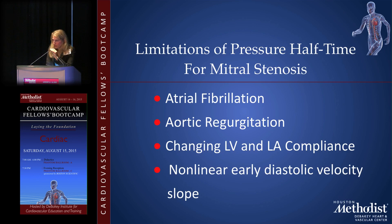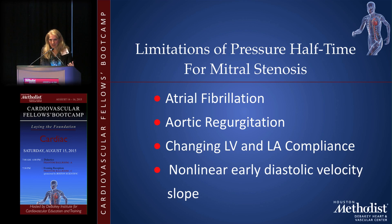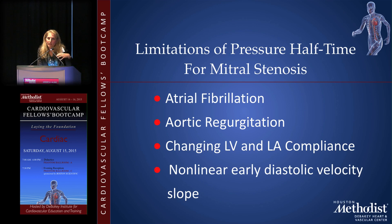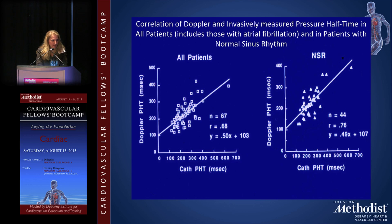The pressure half-time method has limitations similar to those of the mean gradient. Atrial fibrillation causes problems due to beat-to-beat variability. Aortic regurgitation increases LV end-diastolic pressure, which decreases the time for the pressure gradient to decay in half, underestimating stenosis severity. Changes in LV and LA compliance — such as occur during balloon valvuloplasty — also affect pressure half-time. Additionally, atrial fibrillation causes significant inaccuracy in calculating mitral valve area by pressure half-time because it's less accurate than in patients in normal sinus rhythm.